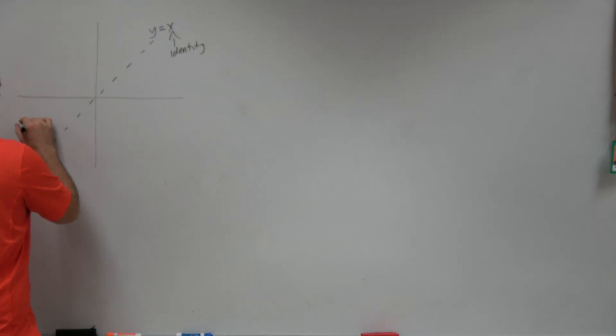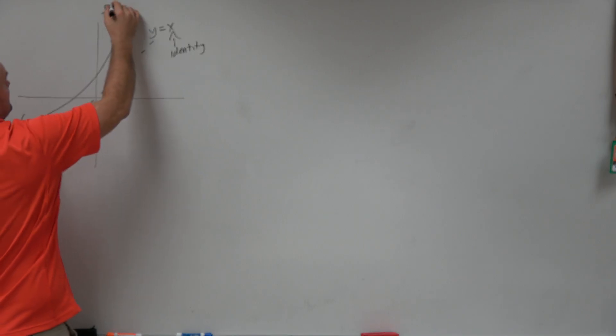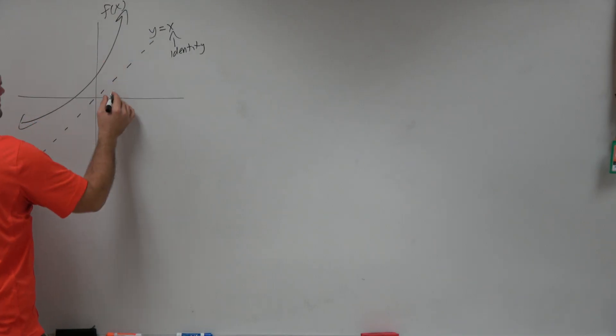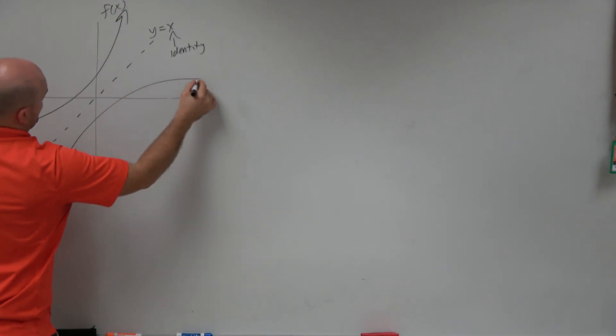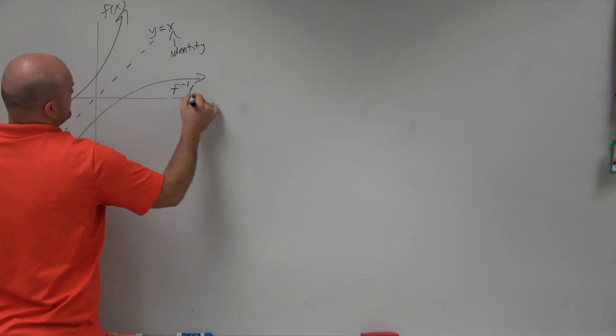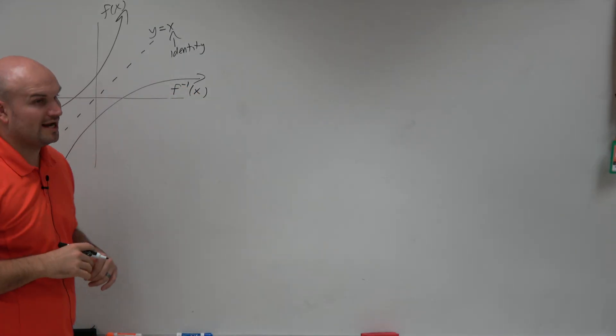And again, x is the identity. So if I had a function that looked like this, then if I wanted to graph the inverse, I would basically just reflect it about the y equals x line.